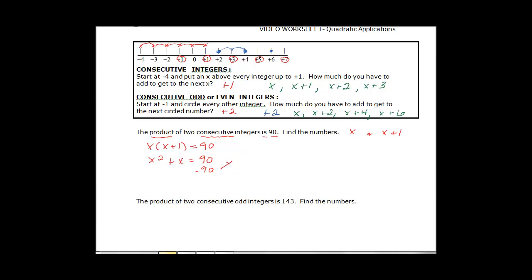So we have, I'll do it over here, x squared plus x minus 90 then equal to 0.